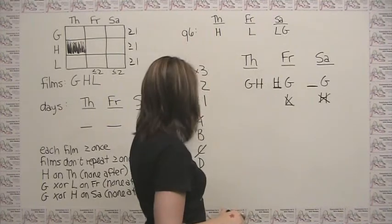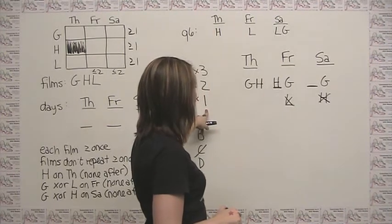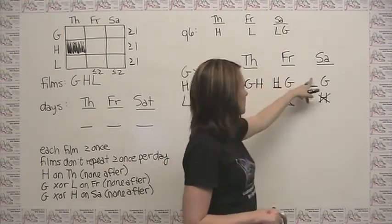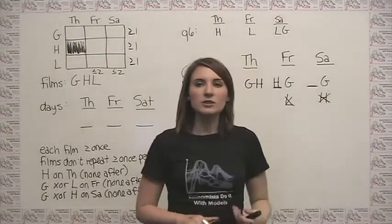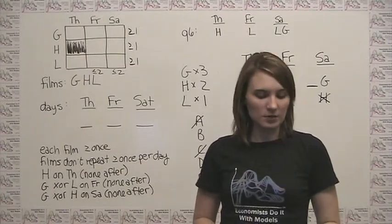We know that L has to go once, but we still don't know whether he's going to go here or here. So hopefully this one extra step was enough to answer the question.